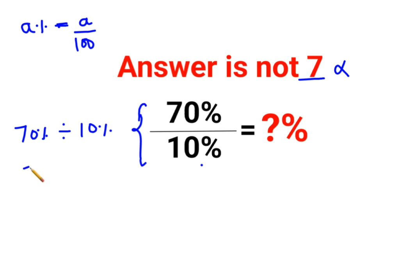So this becomes 70/100 divided by 10/100. Now whenever there is division, we always follow the rule of KCF.